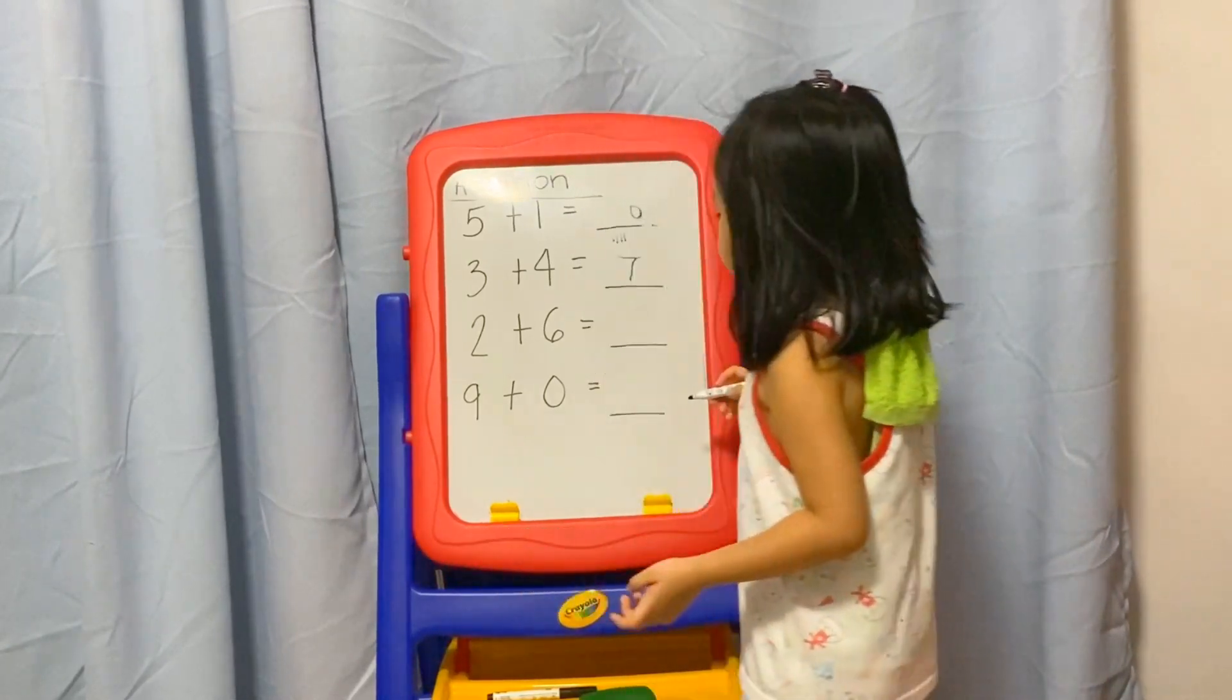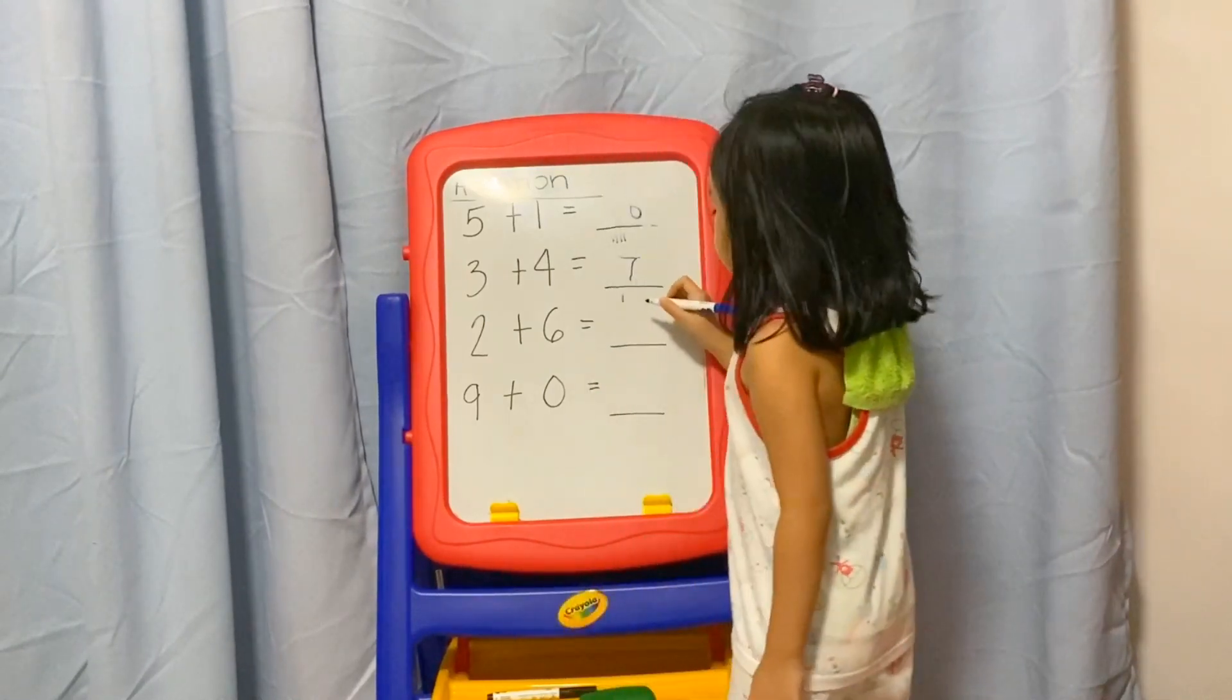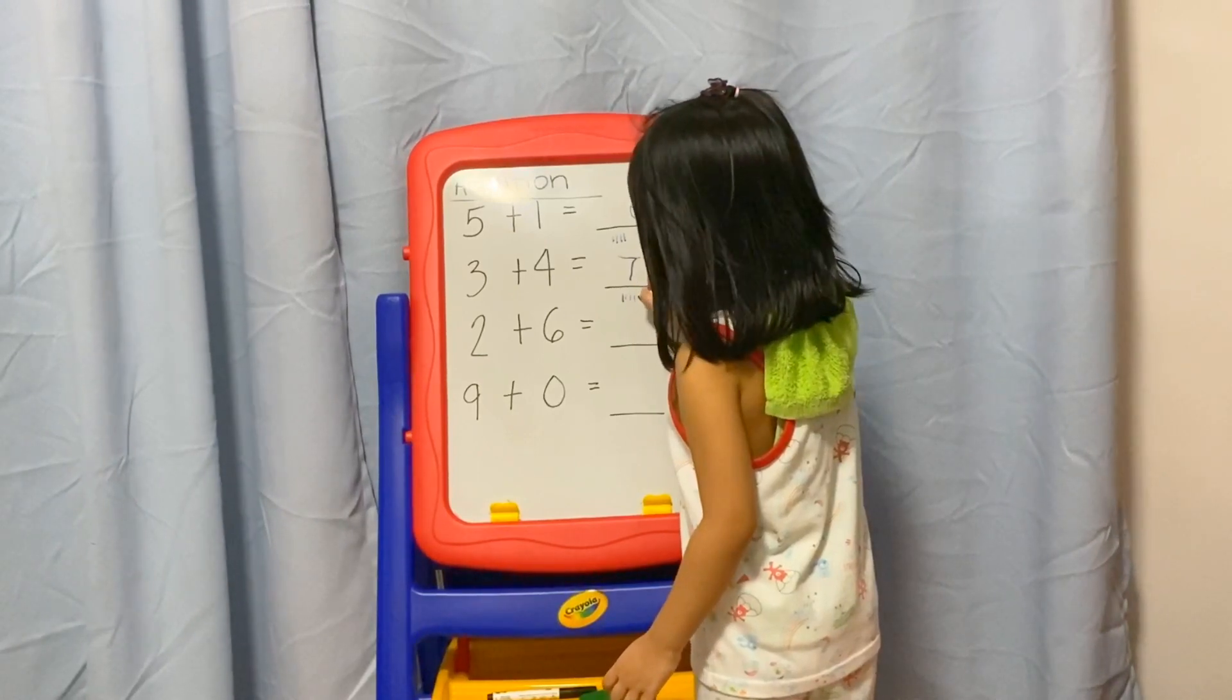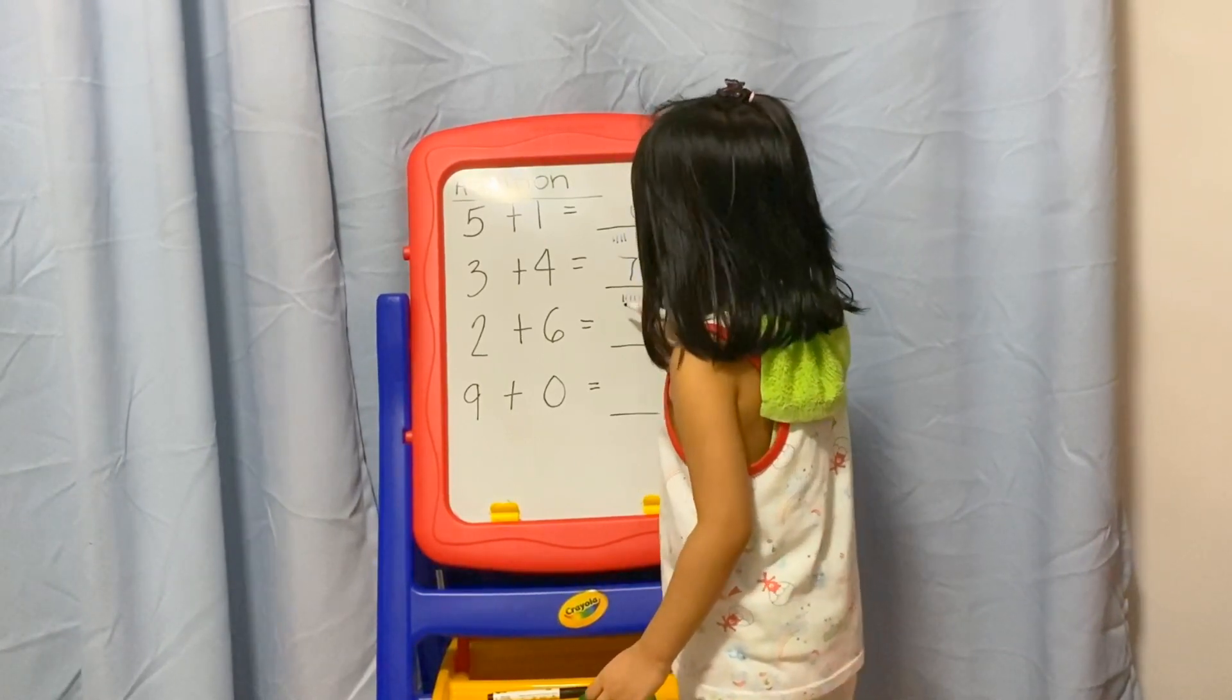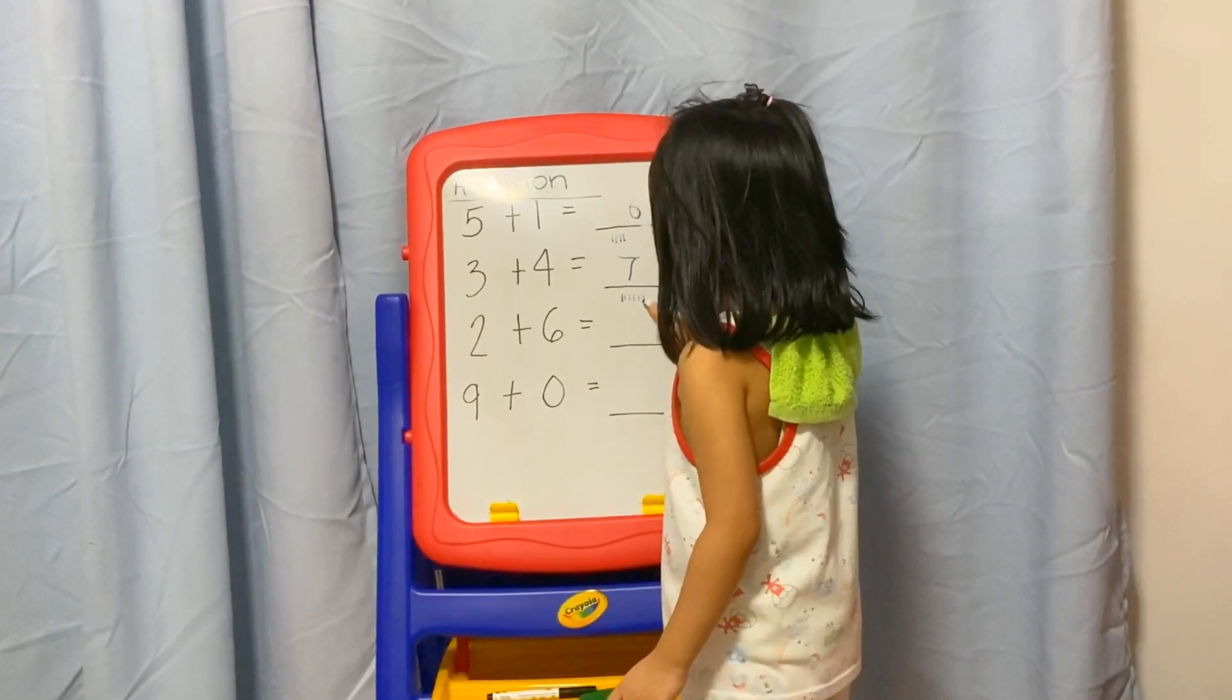Two plus six. After two, it's three, four, five, six, seven, eight. So two plus six equals eight.